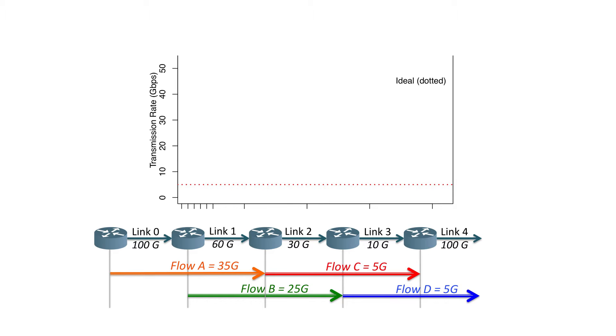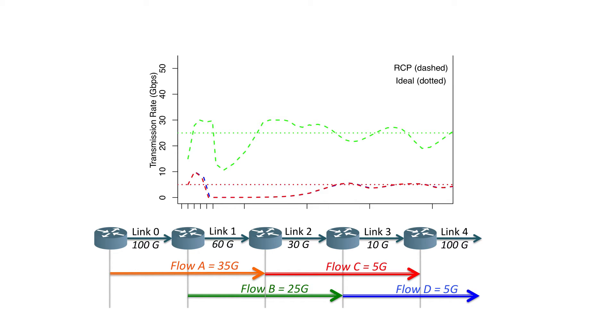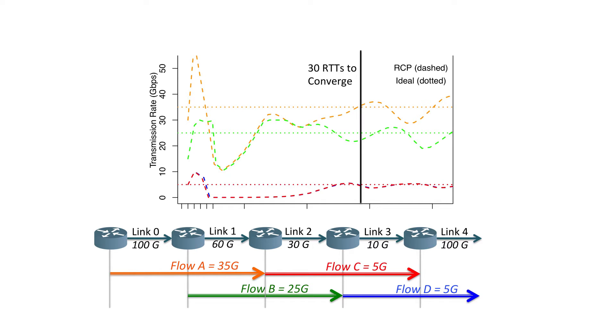Flow C shares a link with another flow, so the fair share rate for that would be half the link capacity, or 5 gigabits per second. In RCP, the switches measure the input traffic rate and the queuing, then adjust the rate advertised to the end host, and the end host picks the minimum rate they hear from the switches. You can see that initially it overshoots, because maybe it didn't detect a lot of input traffic, then it undershoots, and gradually gets to the correct rate. Let me plot the rates for the other flows — they are basically all over the place, and it takes 30 round trip times for these rates to finally converge.